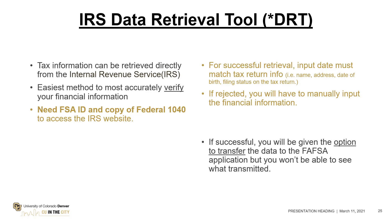The student and parents can both use the Data Retrieval Tool. However, you may not be able to use it if you changed your address since you filed your 2019 tax return, or if parents are married but filed separately — you cannot pull in two separate tax returns. You'll need your FSA ID and password to access the system, and have a copy of your federal tax return in front of you. Some information will be pre-populated based on what you've already entered, but it must match exactly how it is on your tax return — including middle names or initials, which you may need to add or correct.